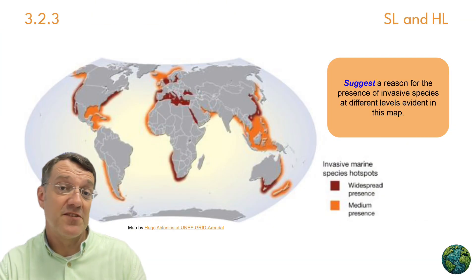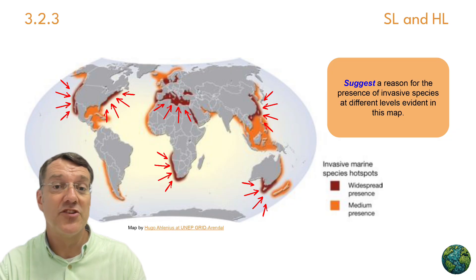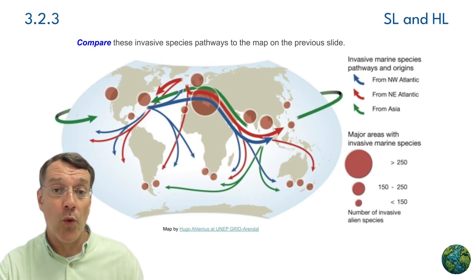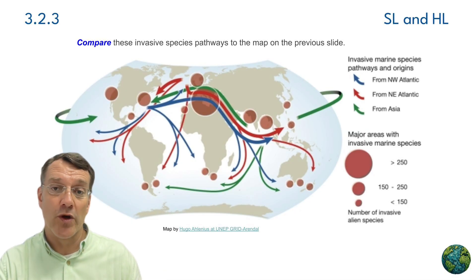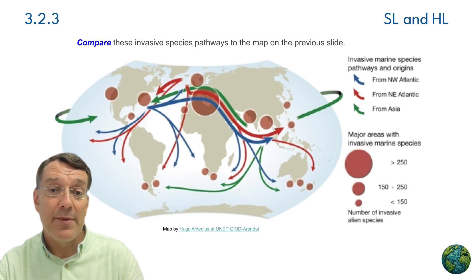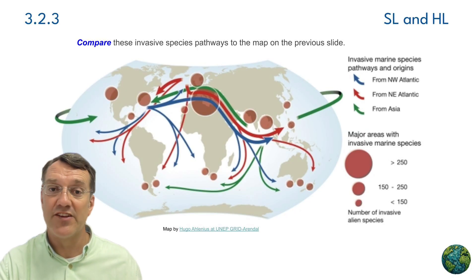This map shows invasive marine species hotspots around the world. The highest concentrations appear along major shipping routes and in areas with busy ports, reflecting one of the main pathways for invasive species — when vessels take on water in one port and discharge it in another, they transport numerous marine organisms across oceans. Other invasion pathways include deliberate introductions for agriculture or the pet trade. Climate change is exacerbating this problem by making previously inhospitable regions suitable for new invasive species.